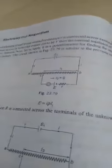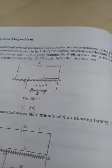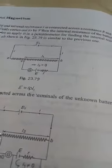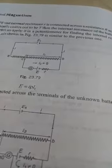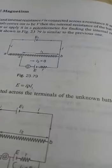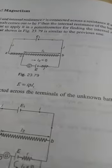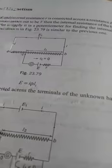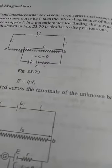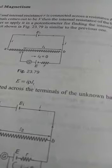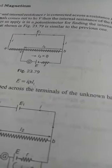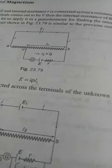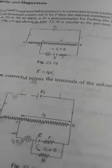We take a cell of EMF E, same like the potentiometer. You have a resistance which is proportional to length and there is a mobile jockey. Then you bring a cell whose EMF is not known and you connect like this, and you adjust the jockey such that i2 is equal to zero. Then, as discussed earlier, the value of E will be equal to i into constant into l1.